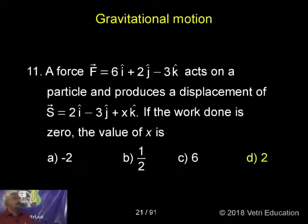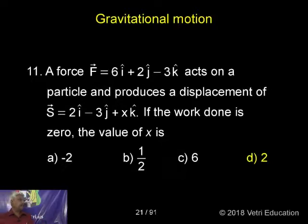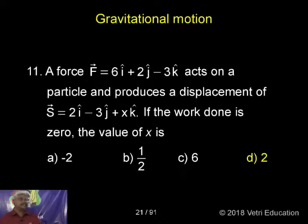We have force F equal to 6i plus 2j minus 3k acting on a particle, and it produces a displacement. This is the same problem we discussed in the previous class — that is, force into displacement, the dot product.